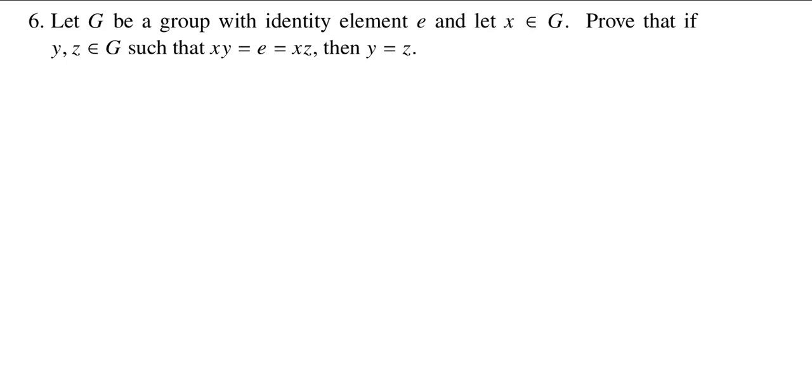So we have a group G with identity E and some element X in G. And we want to prove that if I have two elements Y, Z in G such that XY is equal to E and XZ is equal to E, then Y is equal to Z.